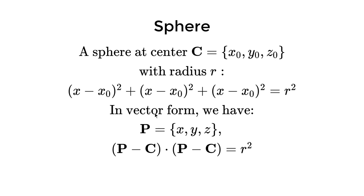We can simplify this equation into vector form. Then it will just become (P - C)² = r², where P is some point on the surface of the sphere.